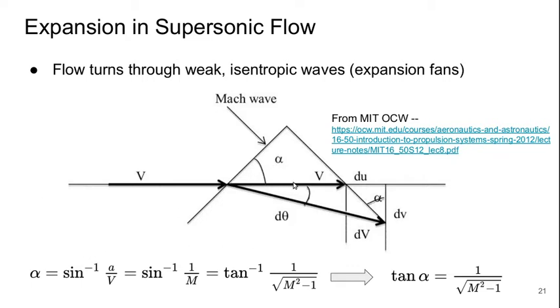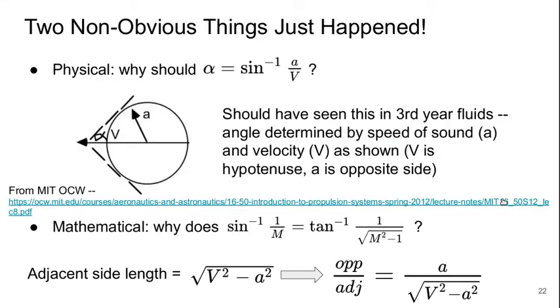So this Mach wave angle alpha is based on the sine inverse of one over the incoming Mach number associated with this velocity V. And we can write that in terms of one over the square root of Mach squared minus one, and we'll see why having that tan alpha is useful a little bit later. So two sort of non-obvious things just happened here, something physical and something mathematical. Let's explore both.